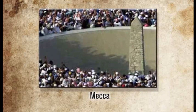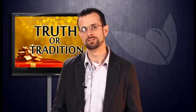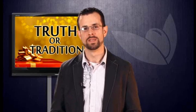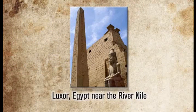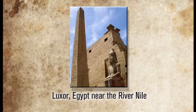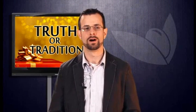How about Mecca? It would scare me to death to find that one of Islam's big idols is an obelisk right there dead center in downtown Mecca. We find these obelisks all over the United States. In Luxor, Egypt near the Nile River is an Egyptian obelisk. In Buenos Aires, Argentina is one of the most famous obelisks in the world — dedicated to the sun god Ra, who is said to live inside it. Everyone in that city who knows the history understands that. Here's one in Amsterdam, one in Ethiopia, one in Mongolia.